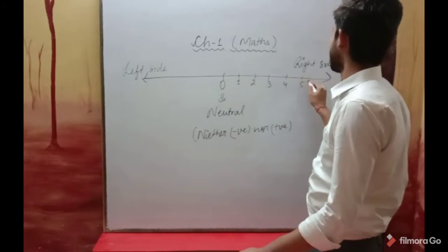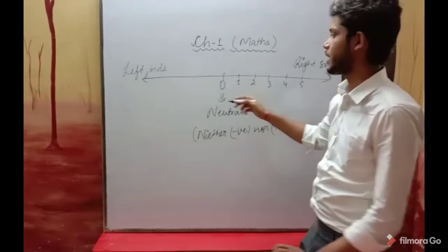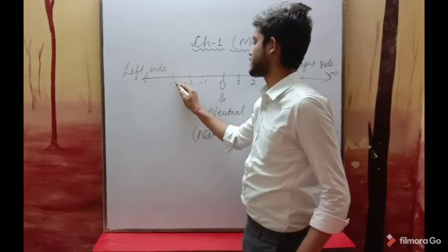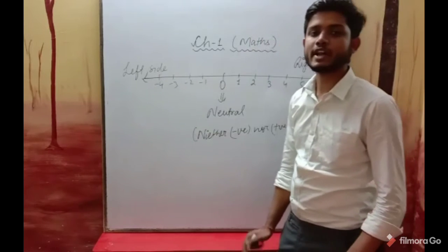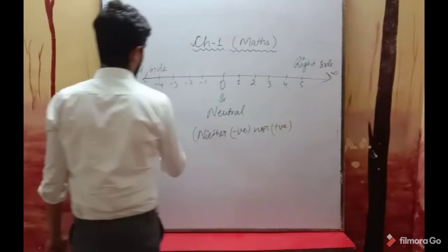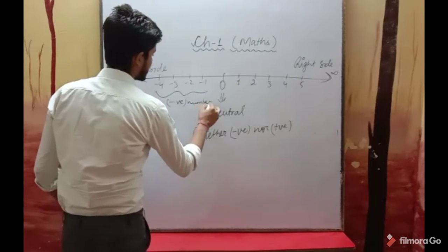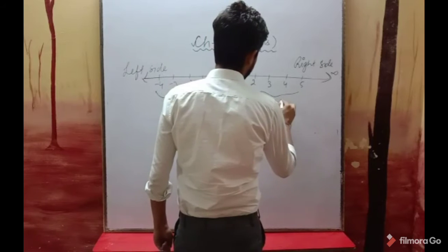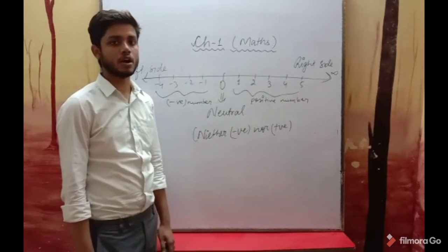On the right side we have 1, 2, 3, 4, 5, and this arrow continues to the right — so the right side represents positive numbers. On the left side, starting from zero going left, we have minus 1, minus 2, minus 3, minus 4 — and all of these are negative integers. So in the definition: all negative numbers and all positive numbers including zero are called integers.